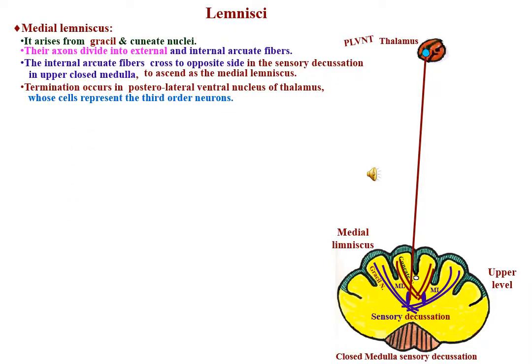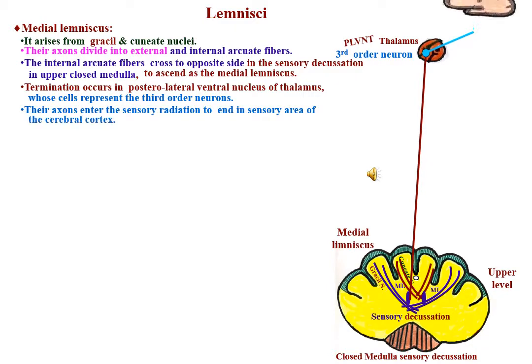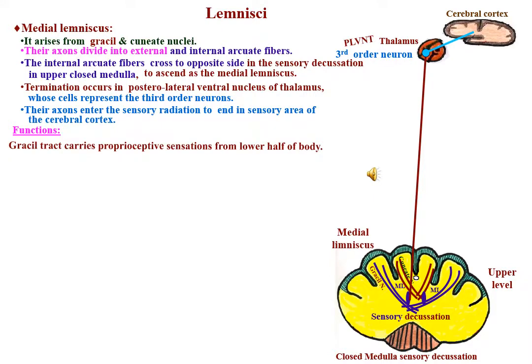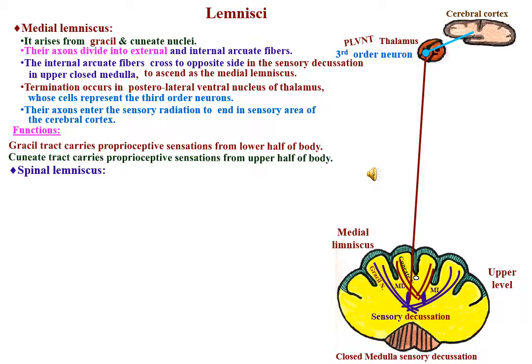Their axons enter the sensory radiation to end in the sensory area of the cerebral cortex. The medial lemniscus carries proprioceptive impulses. The gracile nucleus carries impulses from the lower half of the body, while the cuneate nucleus carries impulses from the upper half of the body.